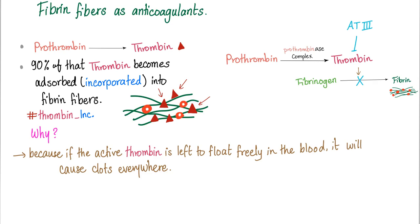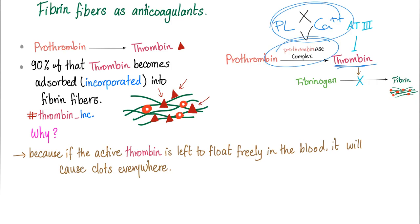Fibrin fibers as anticoagulants — what? You mean the fibrin fibers, which are the actual clot, can act as an anticoagulant? Yes, indeed. Prothrombin is converted into thrombin — thanks to the prothrombinase complex, which includes factor 10, factor 5, phospholipid, and calcium. 90% of that thrombin becomes adsorbed or incorporated into the fibrin fibers. We'll call it thrombin ink — incorporated right into the fibrin fibers alongside the red blood cells.